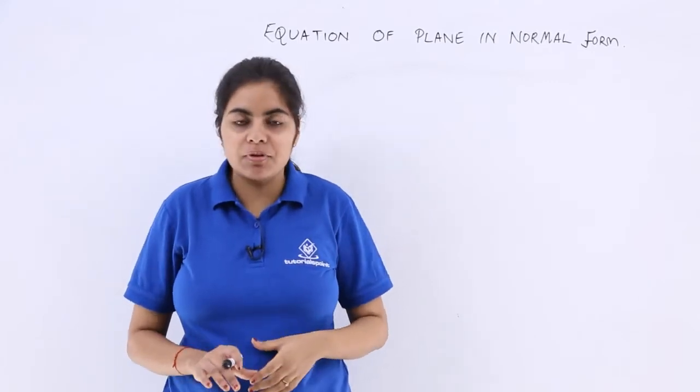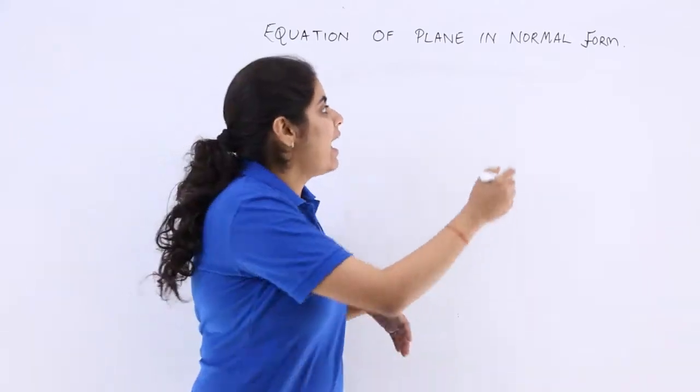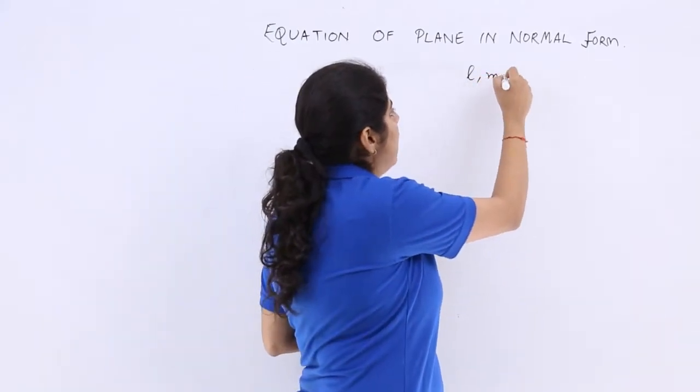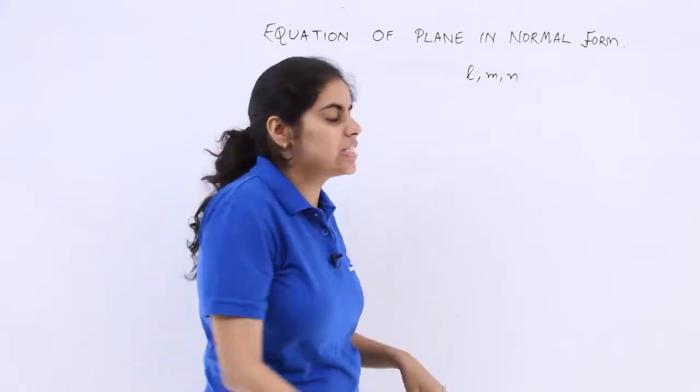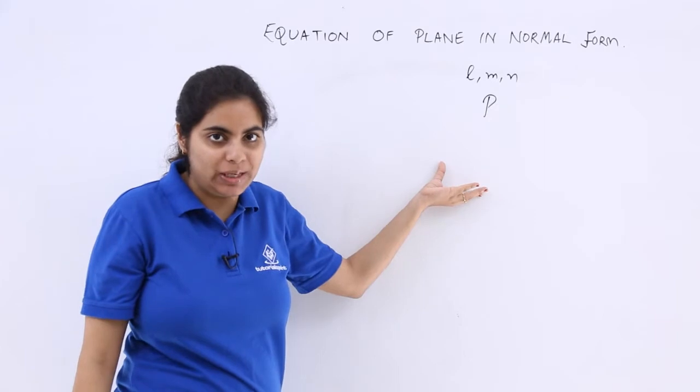So if you have the direction cosines of the normal to the plane as L, M, N and it is at the distance of P units from the origin, what would be the Cartesian equation of such a plane?